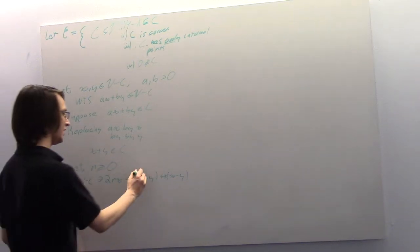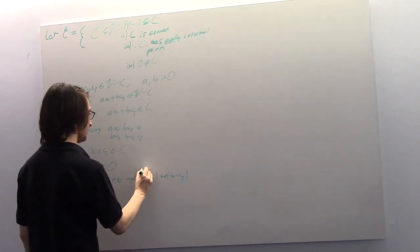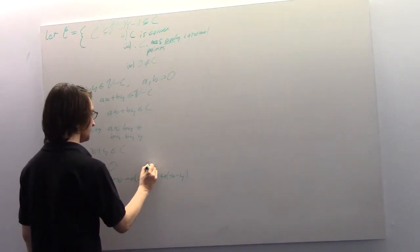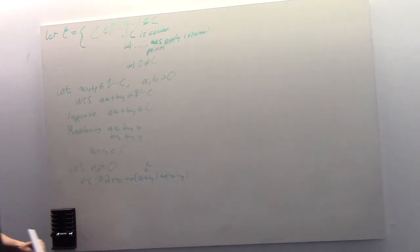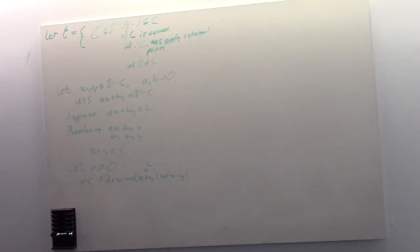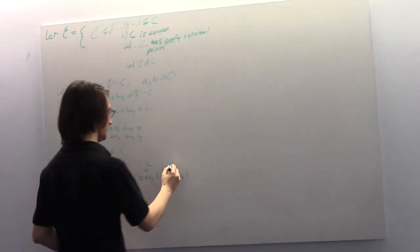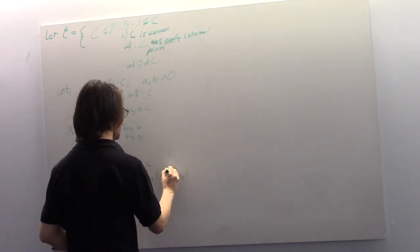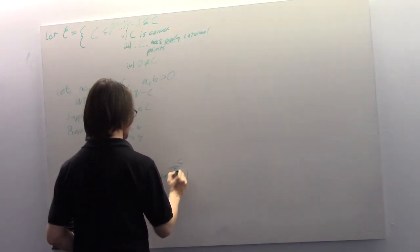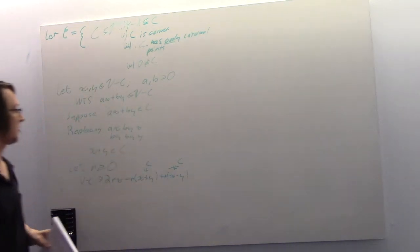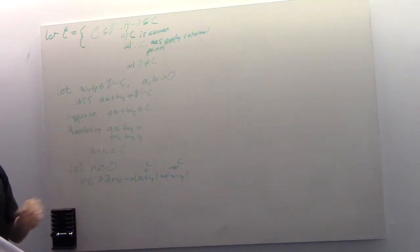We assumed this was an element of C — that's a bad assumption, but it's our assumption. So this must not be an element of C, i.e., it's an element of V minus C.